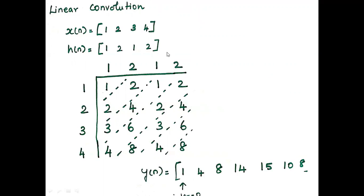We are going to compute the response of the system using a tabular method by writing the inputs 1, 2, 3, 4 and 1, 2, 1, 2 in table form. Then we have to multiply the terms. After multiplying the terms, perform the addition diagonally.